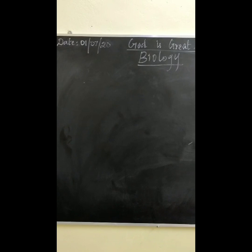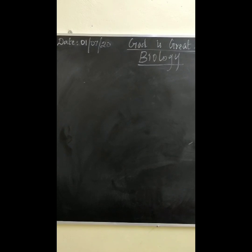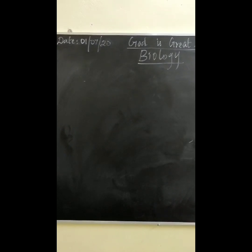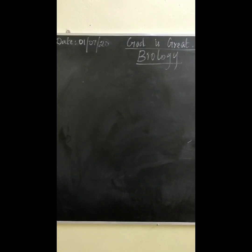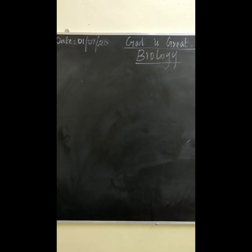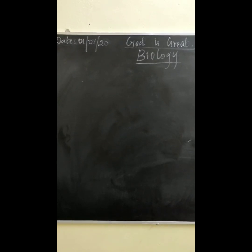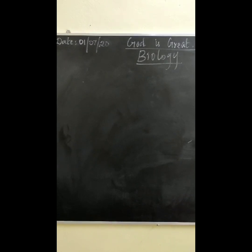First, fill in the blanks. Based on the nature of stimuli, tropism can be classified. Tropism is positive if it grows towards the signal — answer: positive. Tropism is negative if it grows away from the signal — answer: away.